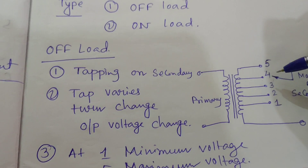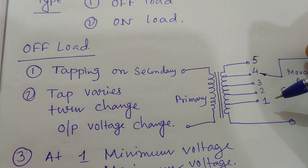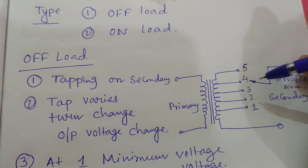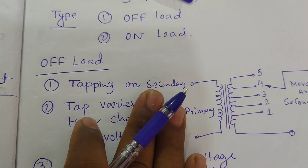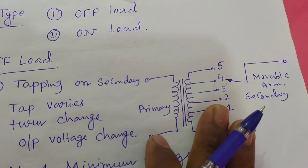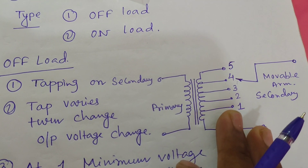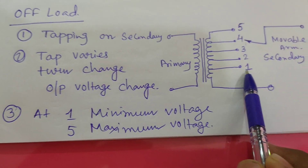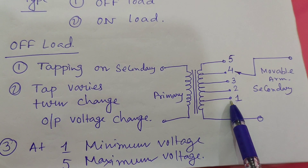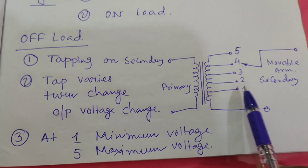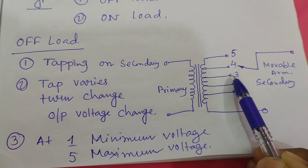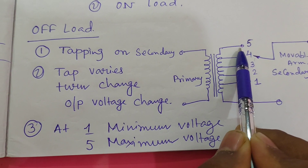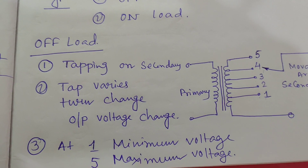If the number of turns is decreasing, you will get the voltage decreasing. If you increase the tap from 1 to 5, you are increasing the voltage because the primary side EMF or alternator voltage has decreased, and accordingly you are maintaining your voltage as per requirements. At terminal 1, the movable arm gives the minimum voltage. Moving up increases voltage, and at tap 5 the maximum voltage is obtained.